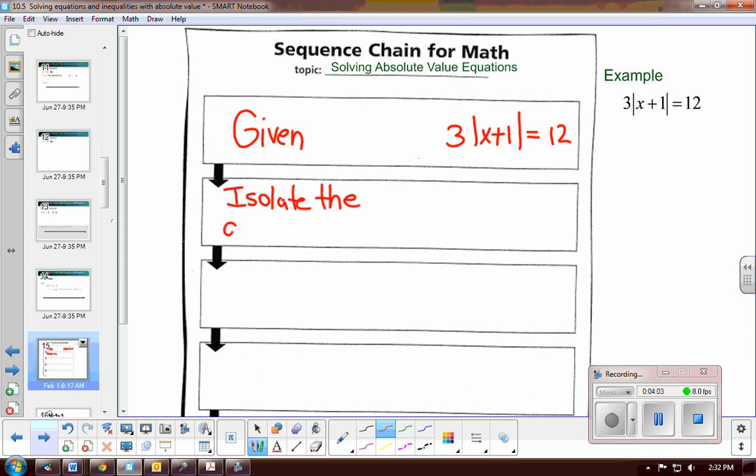Now the previous example, it was already isolated. But in this example, I'm going to have to divide by 3 first. Isolate the absolute value expression. So we'll divide both sides by 3, and we will end up with the quantity of the absolute value of x plus 1 equal to 4.